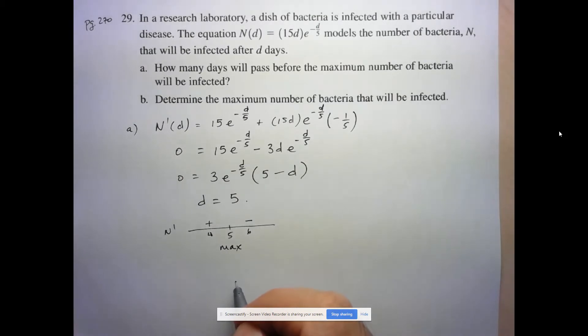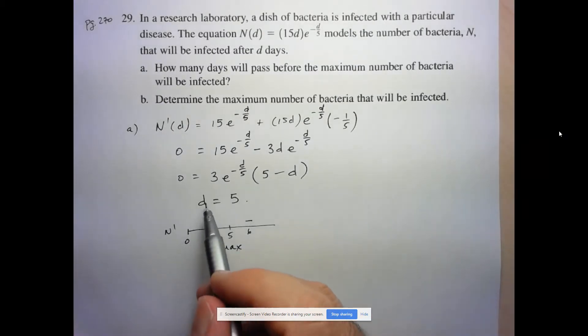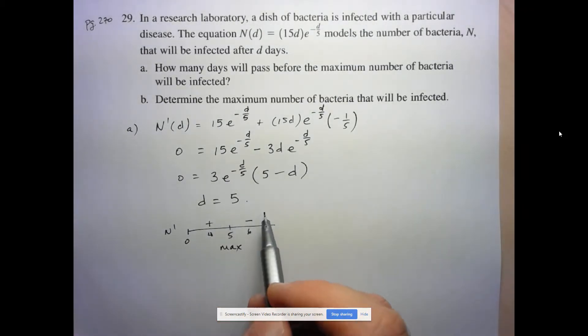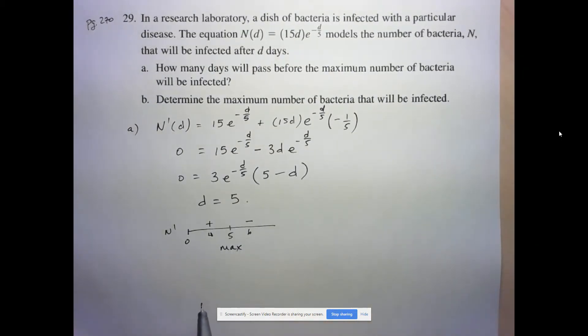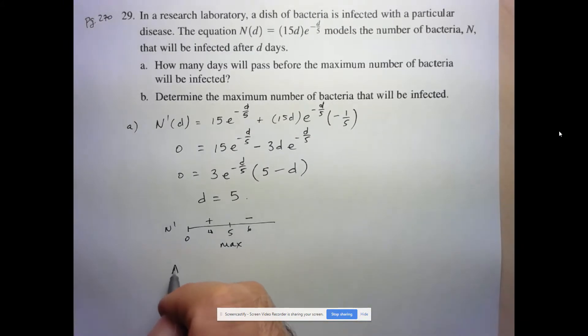Now, the other thing to think about is that we're starting at 0 days. So we see that this function is increasing up until 5 and then continually decreasing from 6 on. So it's not just a local max. In this domain, it represents an absolute max. So here, our answer will be after 5 days.